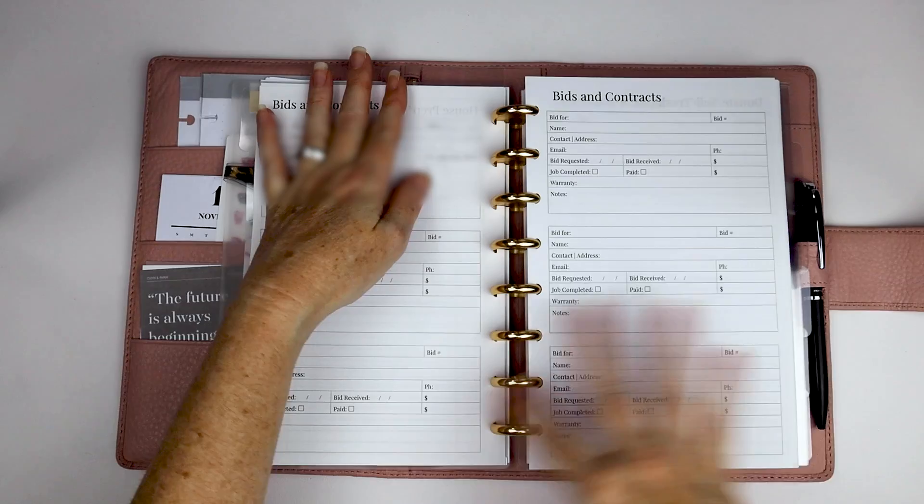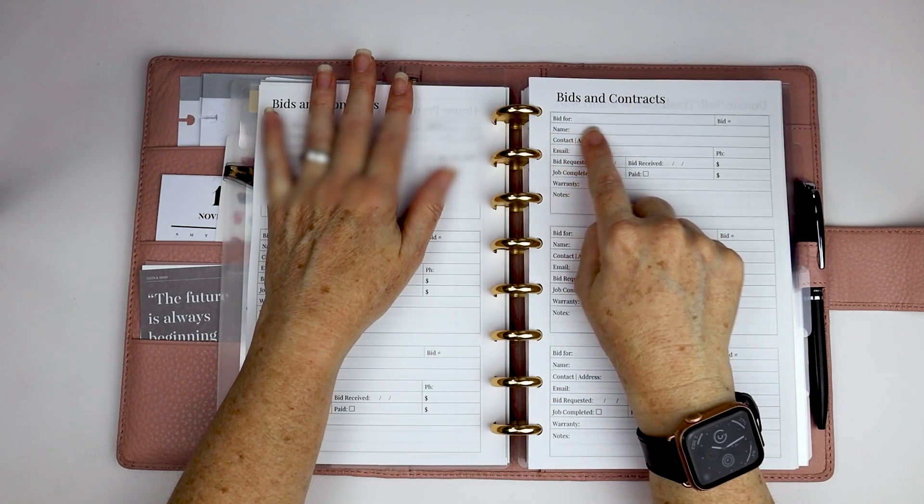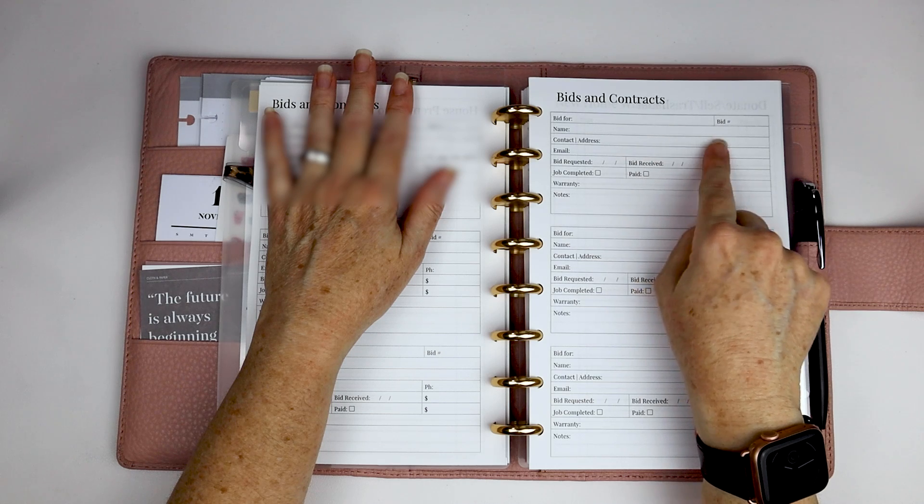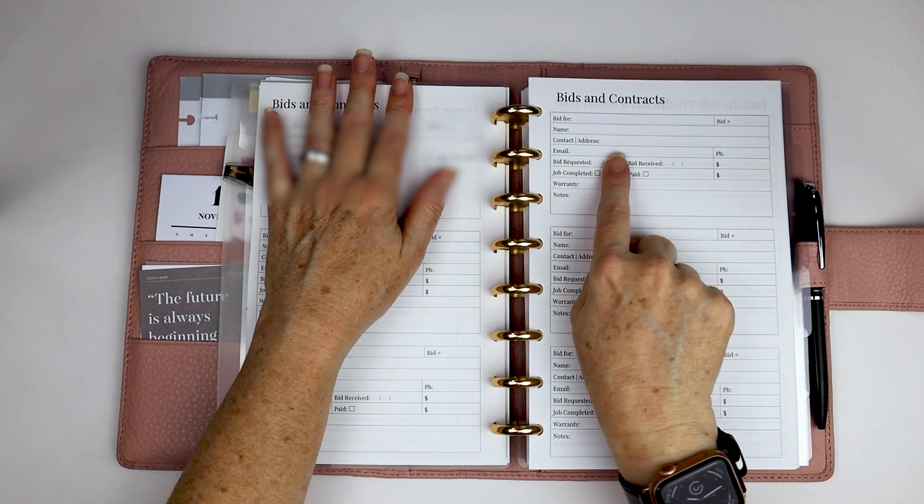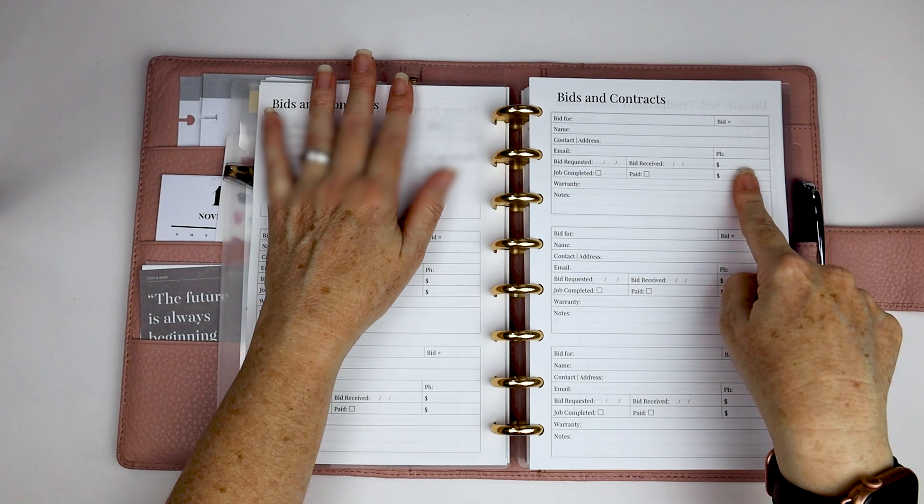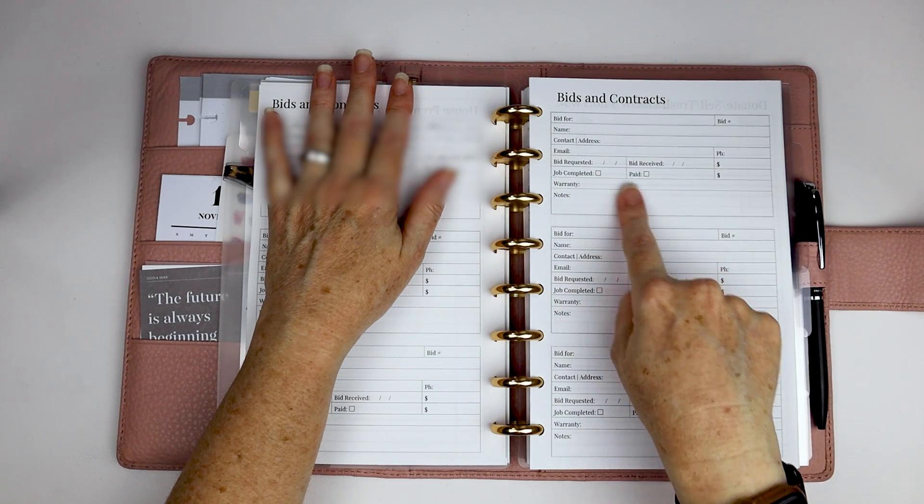And then there, this is a page that I put in. So there's a pre-move to do, a house prep to do. So you can just kind of keep track of lists and things like that. Bids and contracts. There's six places where you can write what it's a bid for, name, the contact slash address of that contractor, email, phone number, when you requested the bid, when you received it, how much it was for, whether the job was completed, whether it was paid, what you paid for it, if there's any warranty notes.